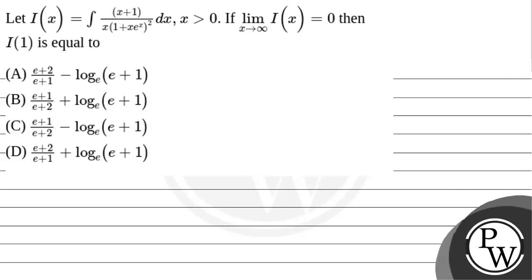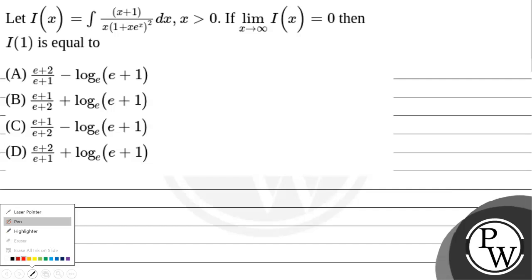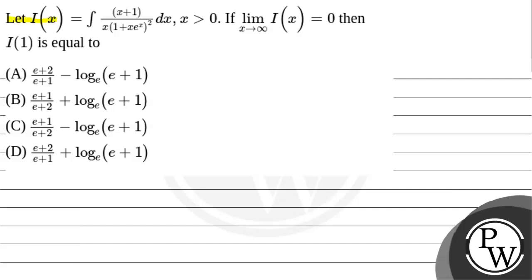Hello everyone. Let us read this question. The question says: let I(x) equal the integration of (x+1) upon x into (1 + x·e^x)² dx, where x is greater than 0. If the limit as x tends to infinity of I(x) equals 0, then I(1) is equal to?